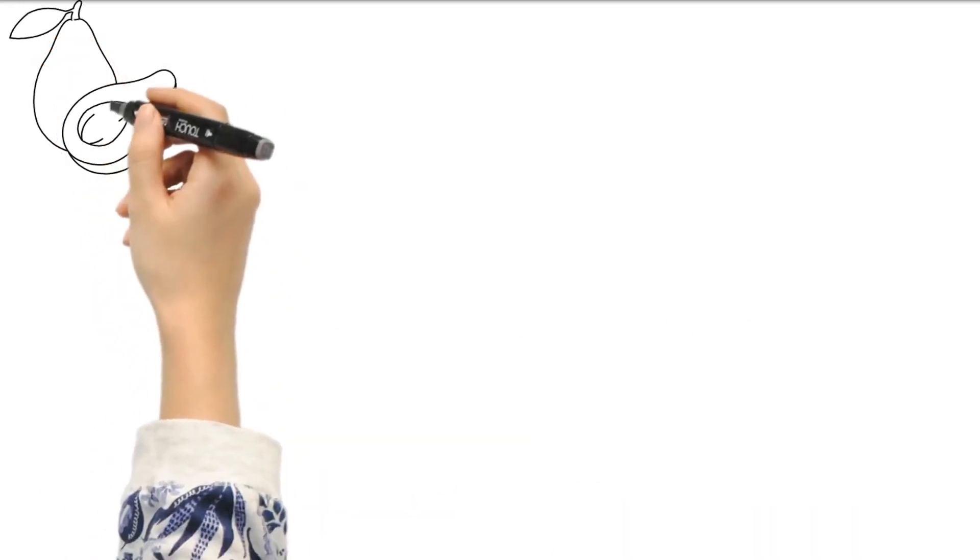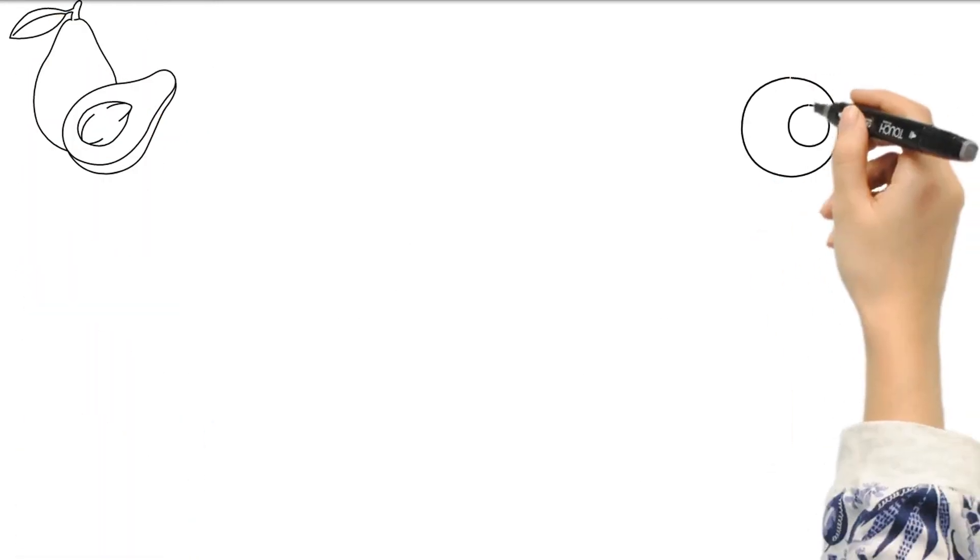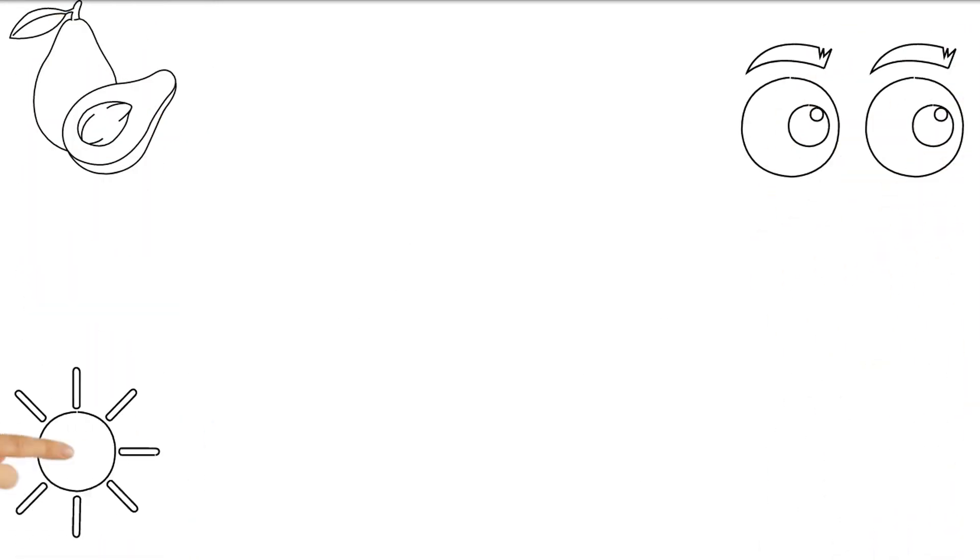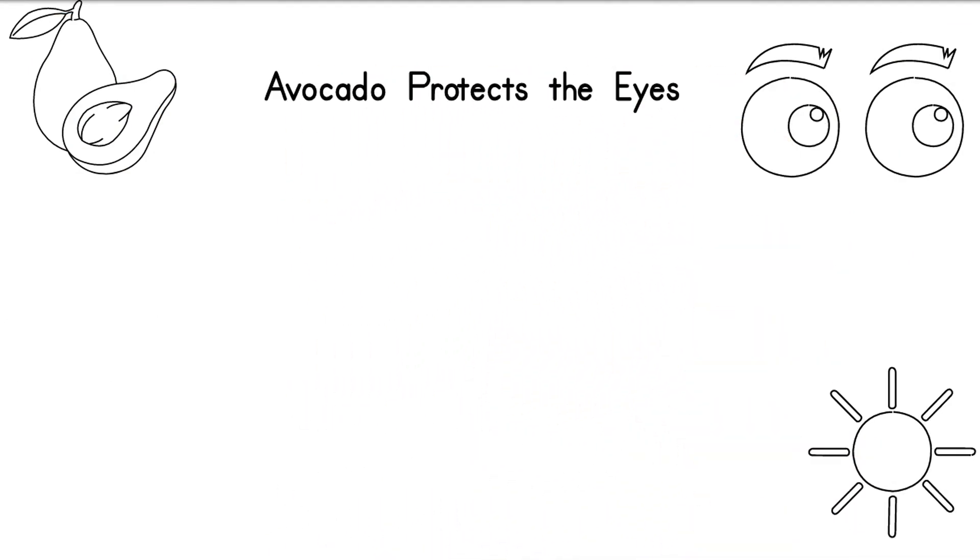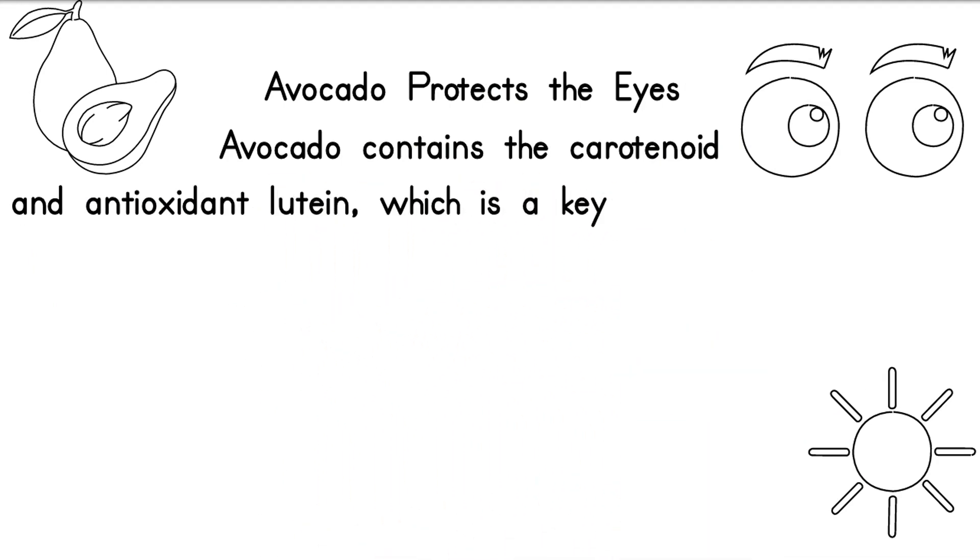Avocado protects the eyes. Avocado contains the carotenoid and antioxidant lutein, which is a key player in eye health. Lutein is deposited into the retina and helps filter out harmful light and protect the eye from free radicals.